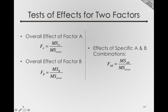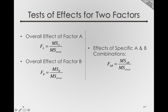Finally, for the interaction between our factors, we'll still form the same mean square AB, which is looking at the AB terms we'll have in our model, divided by the mean square for error. This will give us the F statistic for the AB interaction.